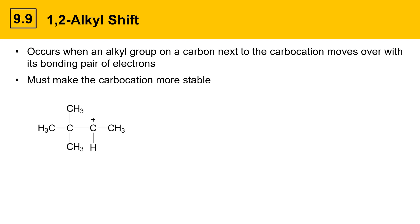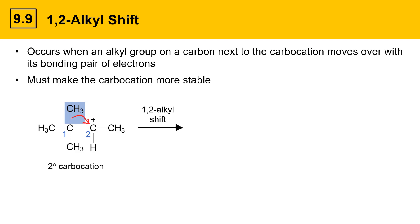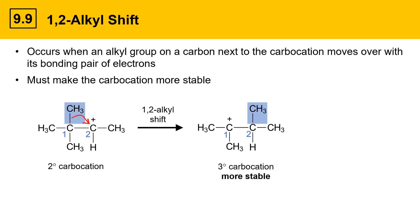Here's a secondary carbocation. We have a carbocation carbon, and next door there's a carbon with groups on it. I'm going to highlight one of the groups with a blue highlight. I'll label the carbon with the group as number 1 and the carbocation carbon as number 2. If that group were to move over with its bonding pair of electrons towards the carbocation, as indicated by the red arrow, this is called a 1,2-alkyl shift. The result is a new carbocation where the methyl group and the carbocation carbon have effectively swapped positions, giving a tertiary carbocation which is more stable. So this is a reaction that's going to happen — it's energetically favorable.